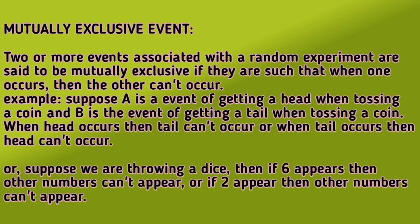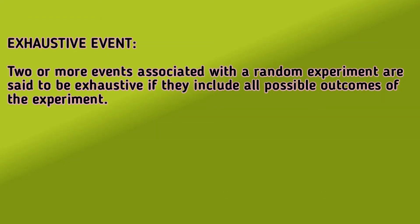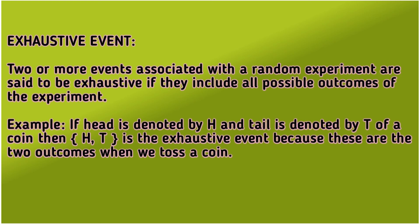And the next one is exhaustive events. Two or more events associated with a random experiment are said to be exhaustive if they include all possible outcomes of the experiment. Whenever you are tossing a coin, you must include both outcomes — head and tail. Or if throwing a dice, the outcomes are 1, 2, 3, 4, 5, 6, and you must include all of them. You cannot exclude any one of these outcomes. This is called exhaustive events.